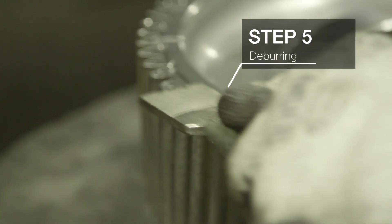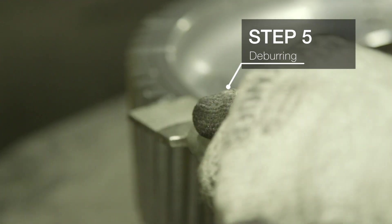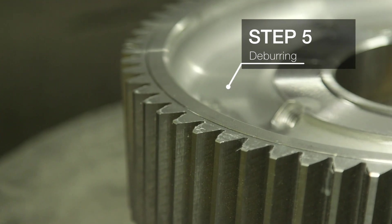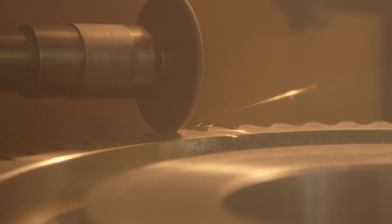After that, we hand deburr every gear, removing the sharp edges formed when the teeth are cut. The deburring process creates a perfect alignment of all other components.